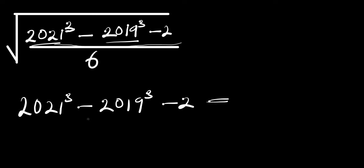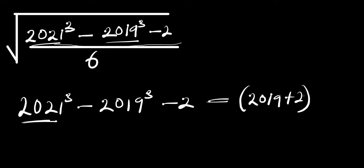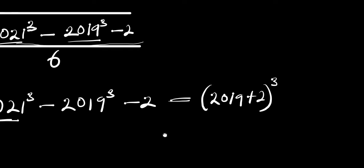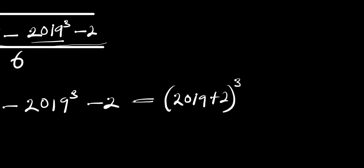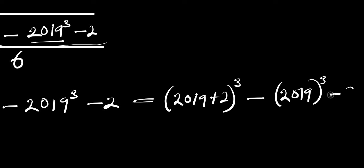This equals — we can rewrite 2021 as the summation of 2019 and 2. So we are going to have (2019 plus 2) raised to the power of 3, then minus 2019 raised to the power of 3, minus 2.